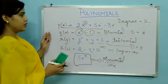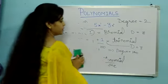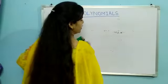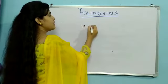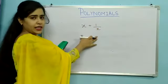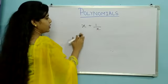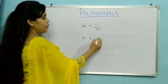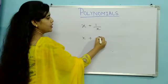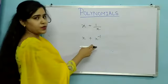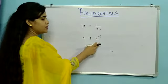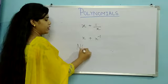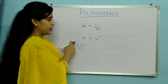So this is all about the degree. Now if you ever get an equation like x plus 1 divided by x, and you are asked whether this is a polynomial — first, note that 1 by x, when it is in denominator form and brought up, becomes x raised to the power minus 1. So is this a polynomial? No, this is not a polynomial.